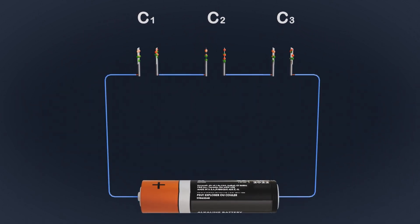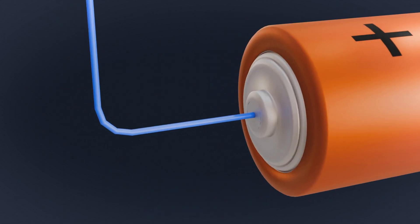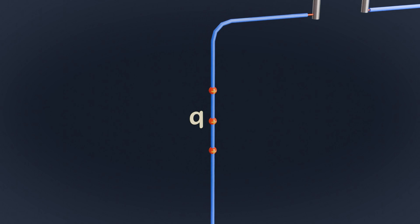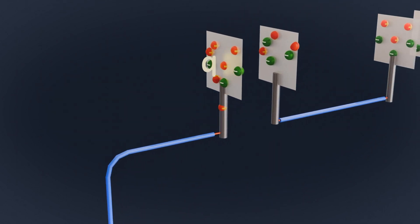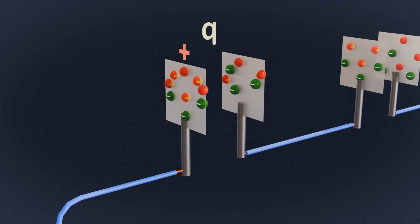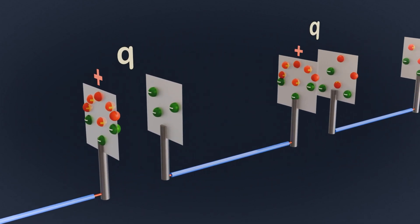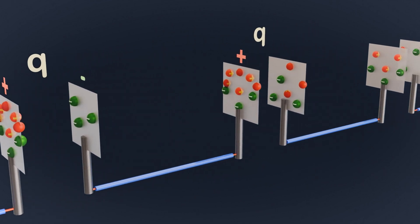Now let's connect a battery to this series combination of capacitors. As soon as we do this, the battery pushes a certain amount of positive charge, Q, onto the first capacitor plate of C1. But here's where things get interesting. The positively charged plate of C1 repels the positive charge on the adjacent plate. This repelled charge moves away, leaving an equal amount of negative charge on that plate.